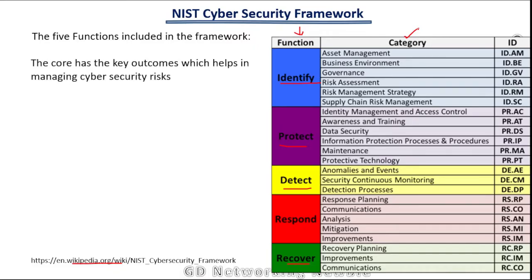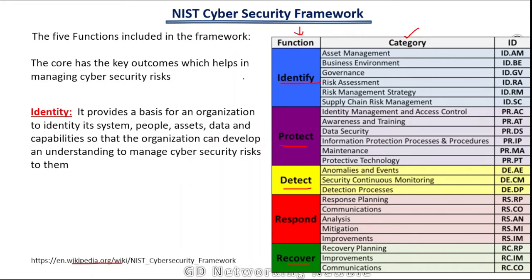These core functions have key outcomes which help in managing cyber security risks. The first function is Identify, which provides a basis for an organization to identify its systems, people, assets, data and capabilities. Organizations need to develop an understanding of what they have, and on the basis of that understanding they can manage their cyber security risks.